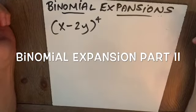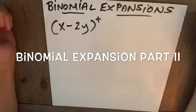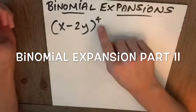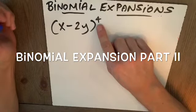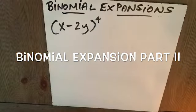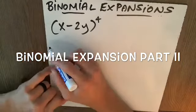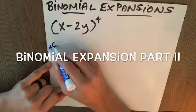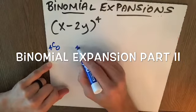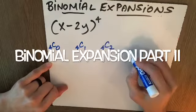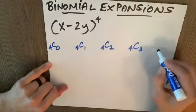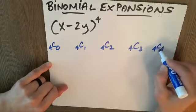If I'm asked to expand x minus 2y to the fourth, I recognize that n is 4. So if I add 1 to this, I know I'm looking at 5 terms. The coefficients of those 5 terms will be 4C0, 4C1, 4C2, 4C3, and 4C4.